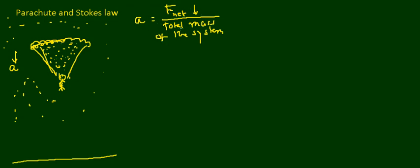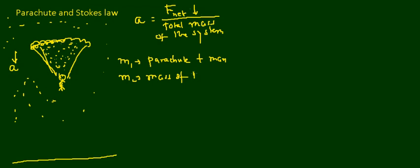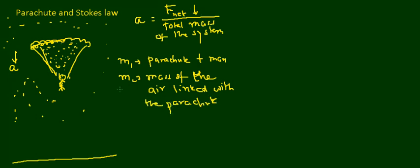Let us get an equation for the total mass of the system. Let m1 be the mass of the parachute plus the man, and m2 be the mass of the air linked with the parachute. So the total mass of the system will be m1 plus m2, and the acceleration equation takes the form: a equals F_net (downward) divided by (m1 + m2).